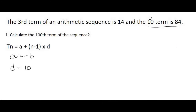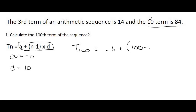So now we can calculate the hundredth term. Term 100 equals — using the formula — A is minus 6, n is 100, so 100 minus 1, and the common difference is 10. Type all of this into the calculator and you get an answer of 984. So whenever you get a question like this, don't try to work it out in your head. Plug it into the formula. You're usually going to end up with a simultaneous equation, and then you solve. Easy as that.